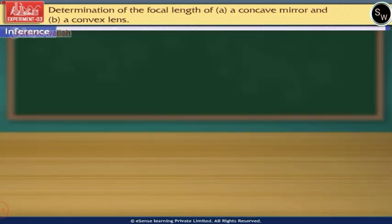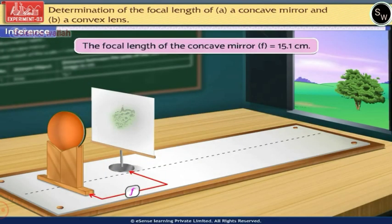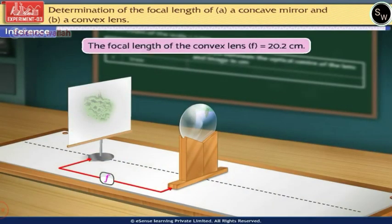Inference: The focal length of the concave mirror F is equal to 15.1 centimeter. The focal length of the convex lens F is equal to 20.2 centimeter.